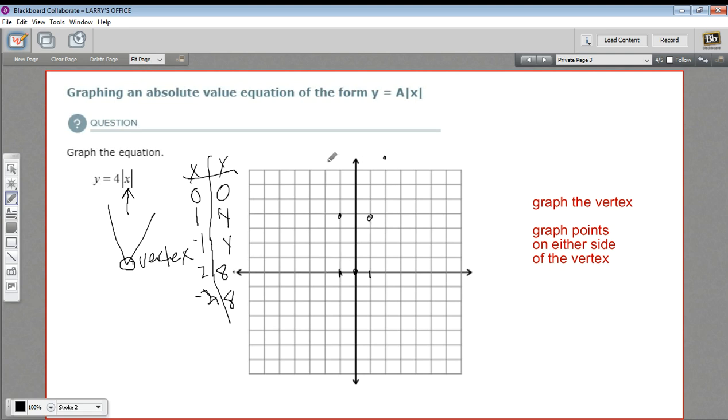And once we've got that many points we can just draw in our diagonals, and there we go. That is the graph of four times the absolute value of x. So that is how to graph an absolute value equation.